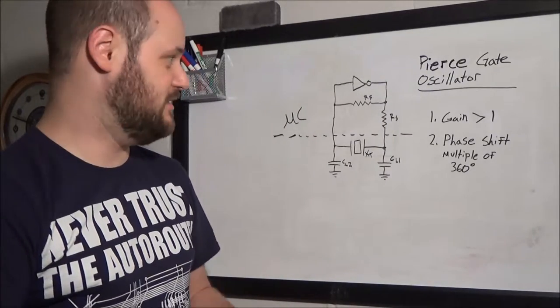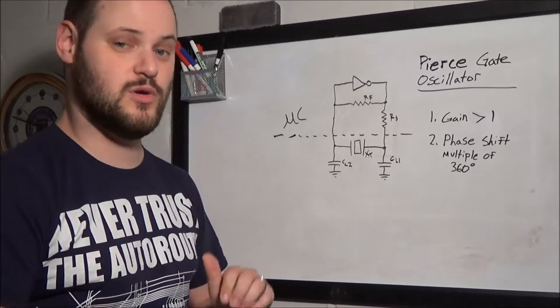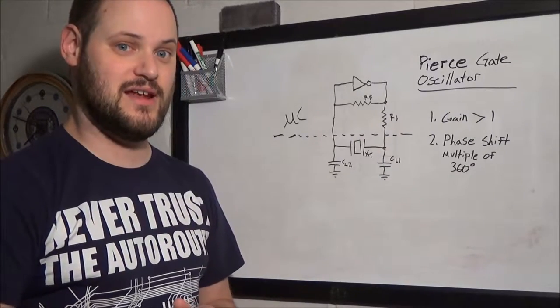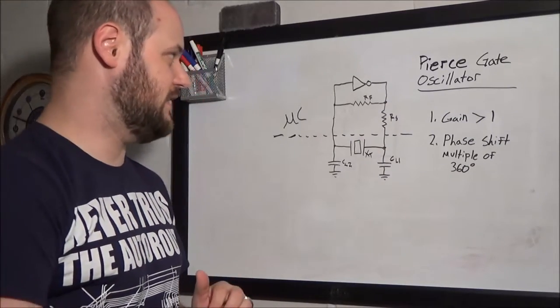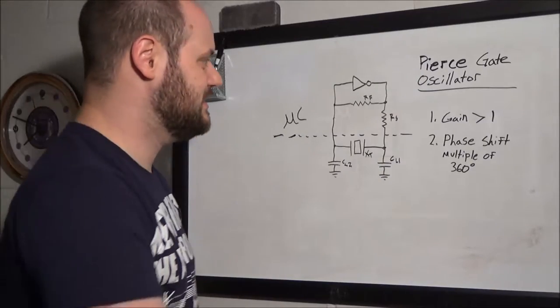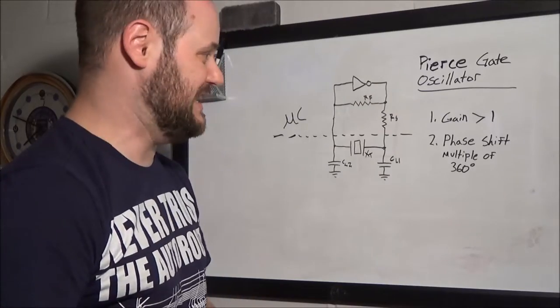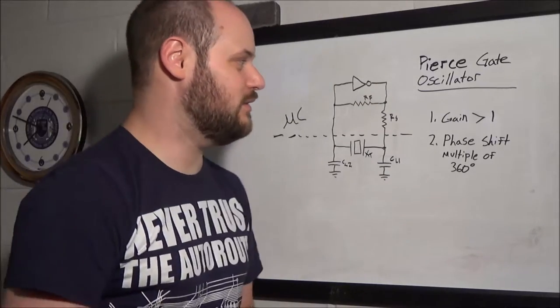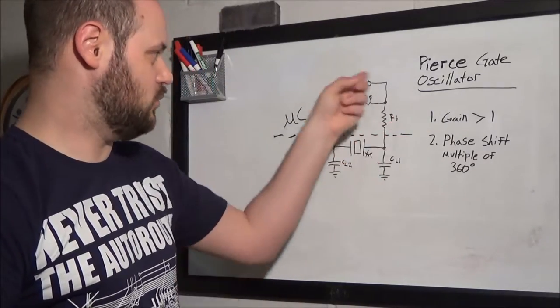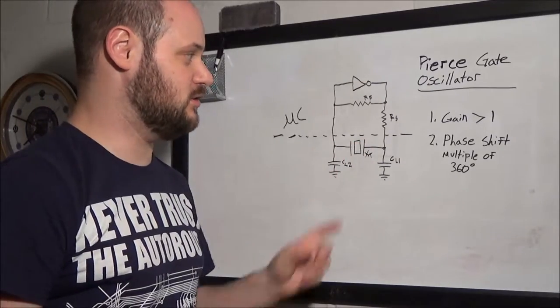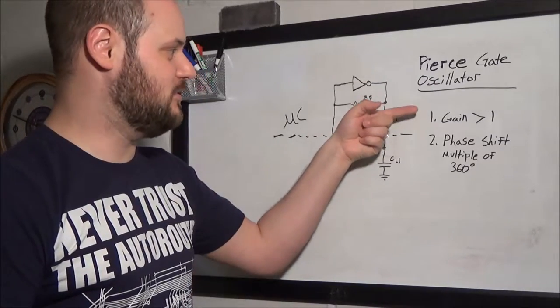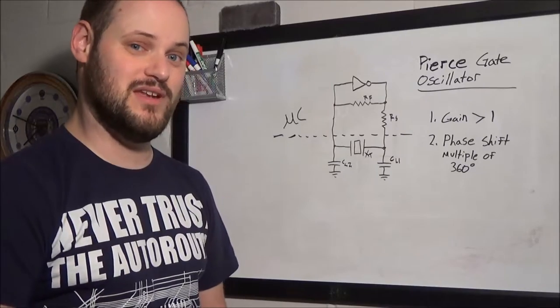Okay, so what do we need to satisfy as far as criteria in order to sustain oscillations? Well, that's critical to this circuit, as with any oscillator. And you might remember this if you had gone to EE school. The gain around the loop, meaning within the circuitry, including the feedback, needs to be greater than 1.